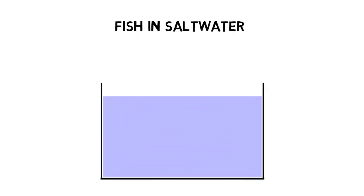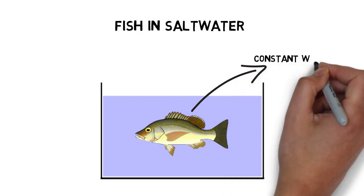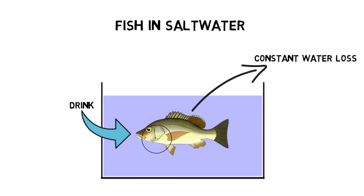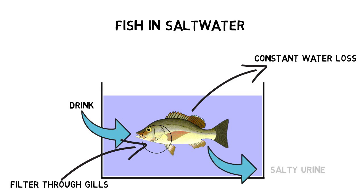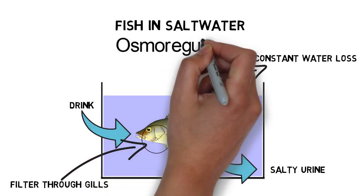Fish in salt water face a similar situation as their bodies contain less salt than the surrounding water. The salt water constantly draws water through their skin. To prevent dehydration, fish permanently drink huge amounts of salt water that they filter in their gills and produce only small amounts of high concentrated salty urine. This process is called osmoregulation.